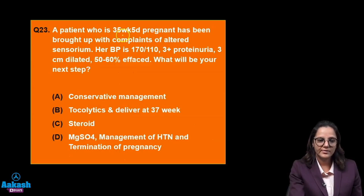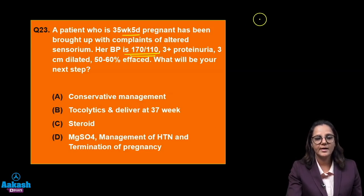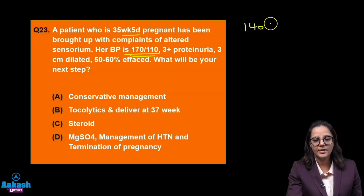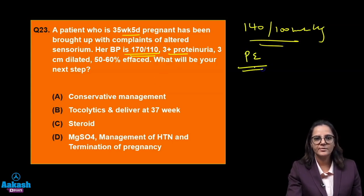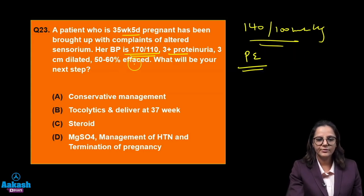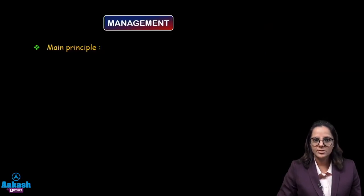A patient at 35 plus 5 weeks presents with altered sensorium — the brain is being affected. Blood pressure is 170 by 110. Gestational hypertension threshold is more than 140 by 90 mmHg on two occasions four hours apart. 3 plus proteinuria means preeclampsia — proteinuria more than 1 plus is preeclampsia. She is 3 centimeters dilated, 50 to 60% effaced. What will be your next step? She has also progressed in labour.